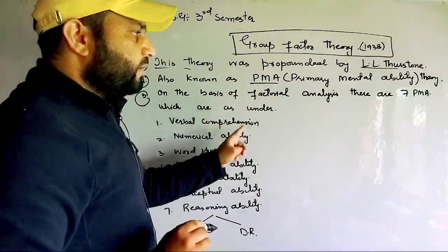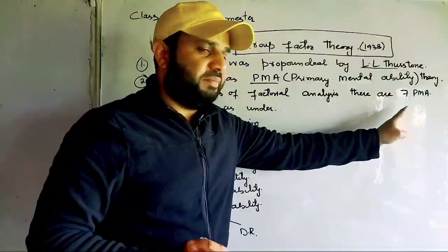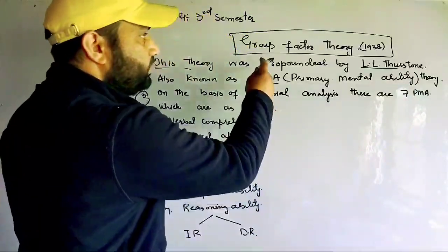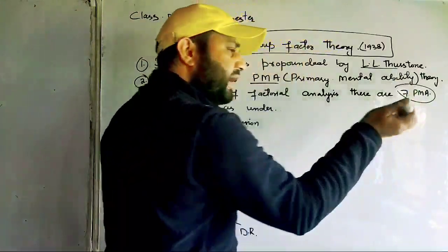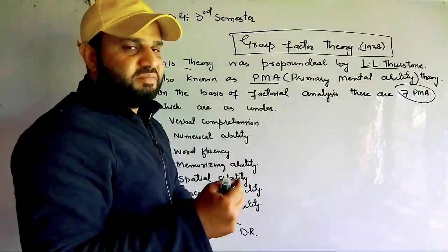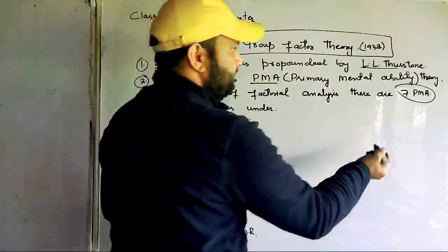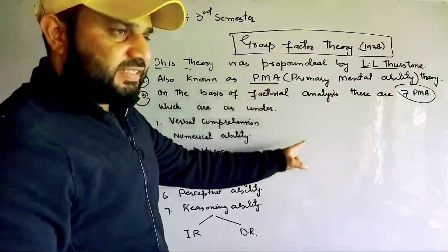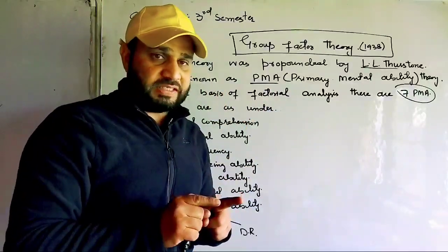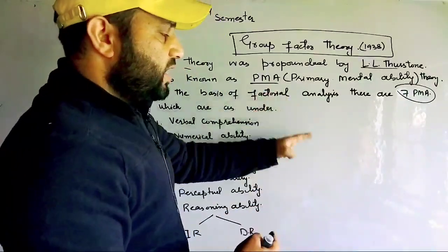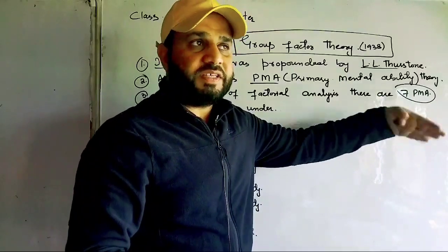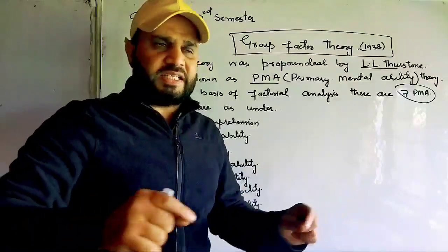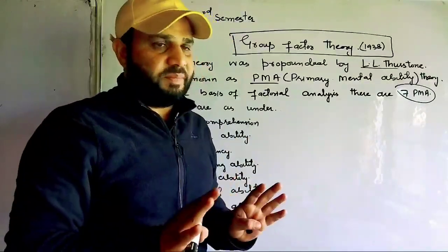Point number three: on the basis of factor analysis, there are seven PMAs — Primary Mental Abilities. According to L.L. Thurstone, he first said there are seven; then later it was modified and said there are nine abilities — seven to nine abilities. Just as Spearman did factor analysis, Thurstone also used factor analysis and said there are seven basic mental abilities, found in everyone — in some more, in some less, but found in everyone.